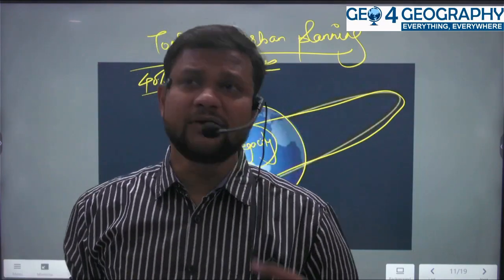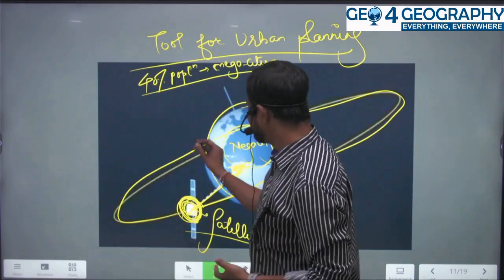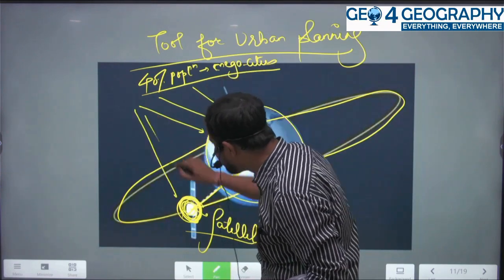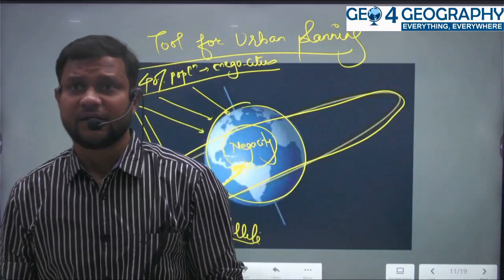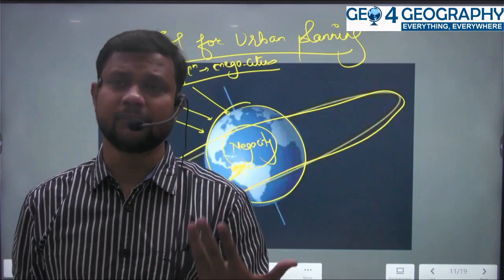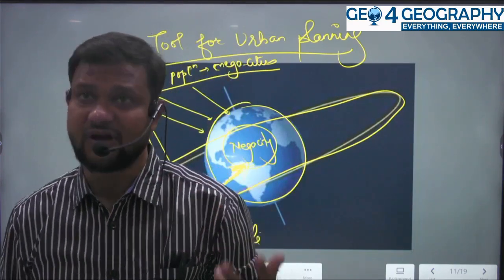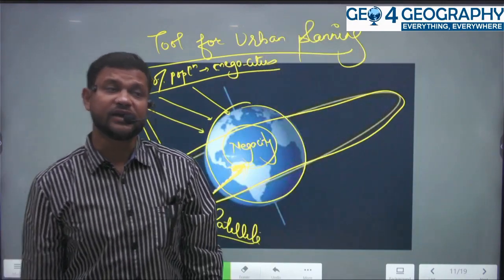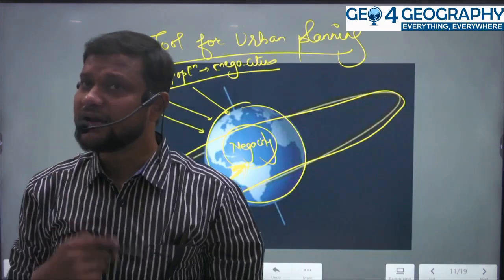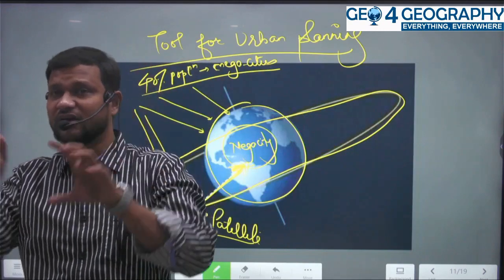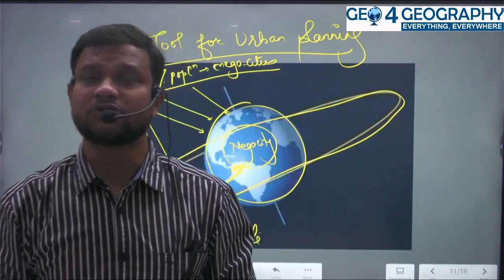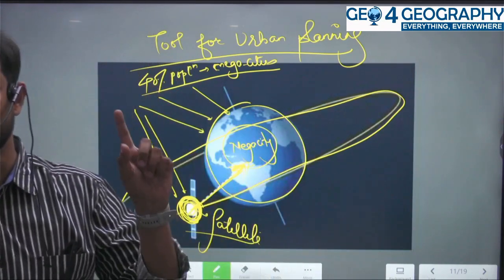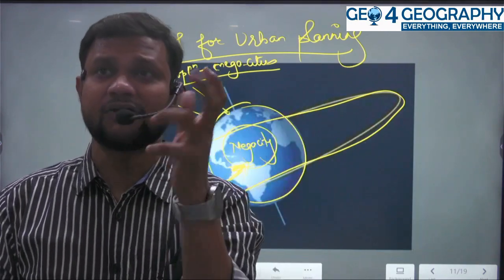How does the satellite town provide relief for the mega city? Simply, the population that is trying to enter the mega city now has another option made available by means of this satellite town. It acts as a kind of counter magnet to some extent — the population that is over-concentrated in mega cities like Delhi, Mumbai, Tokyo, and New York can instead be directed to these parallel satellite cities developed nearby, providing potential migrants an alternative destination.